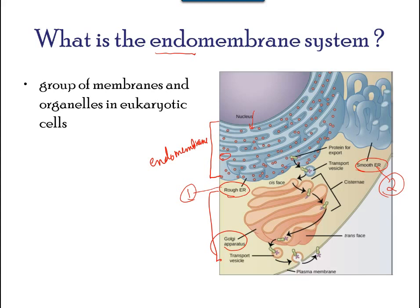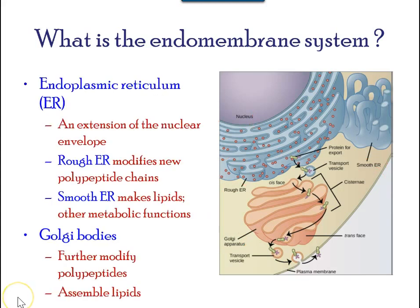The rough endoplasmic reticulum is so named because the ribosomes attached to its cytoplasmic surface give it a studded appearance when viewed through an electron microscope. It is mainly used in the production of proteins.